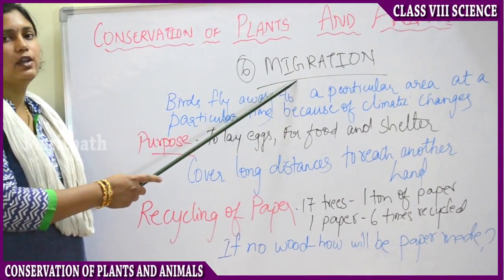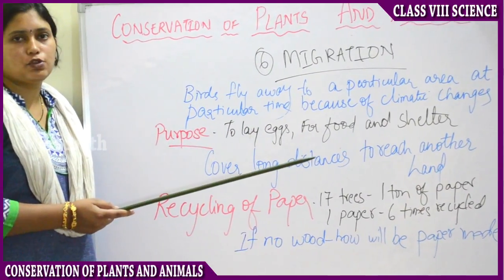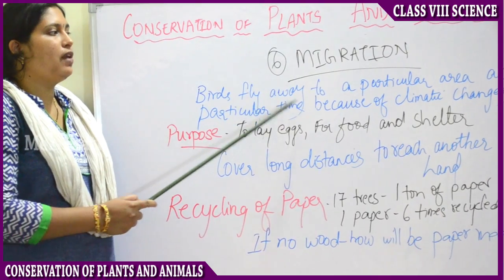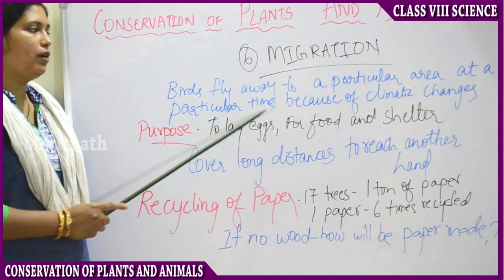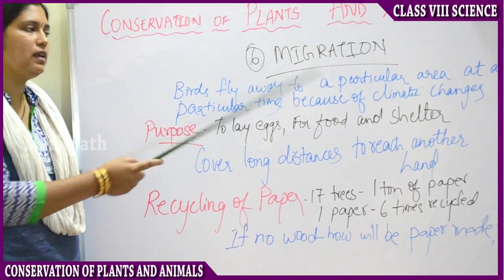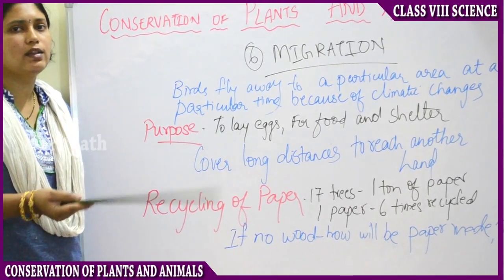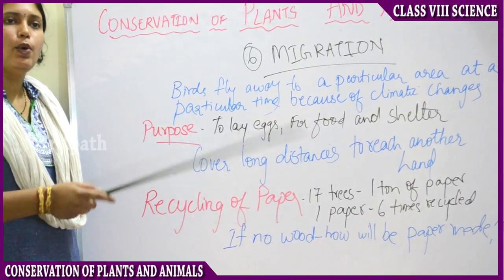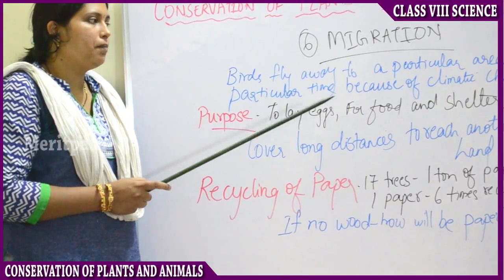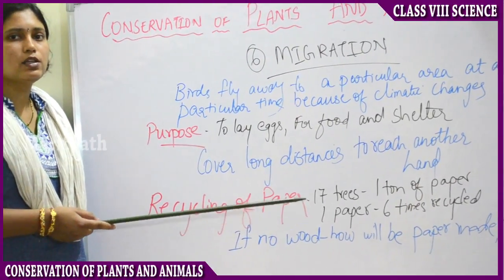The next topic is migration. Plants do not move from place to place — they are fixed at one place. Whereas animals may move from one place to another. Birds fly away to a particular area at a particular time because of climatic changes. Some birds, due to extreme hot or extreme cold weather conditions, move from one place to another at a fixed time of the year. This process of moving from place to place for the purpose of food or shelter is called migration.